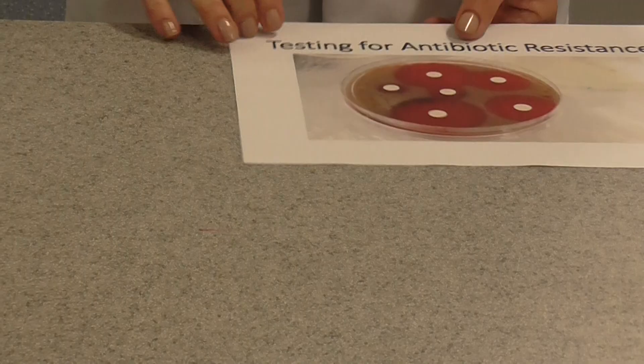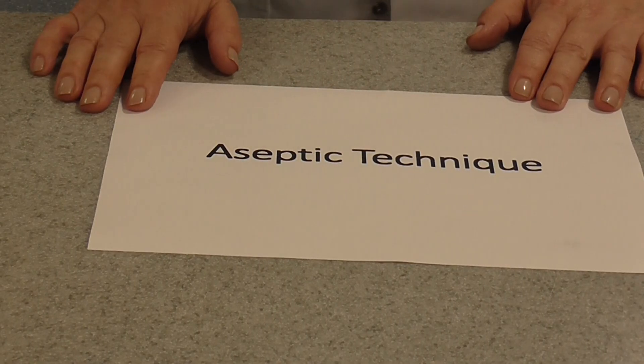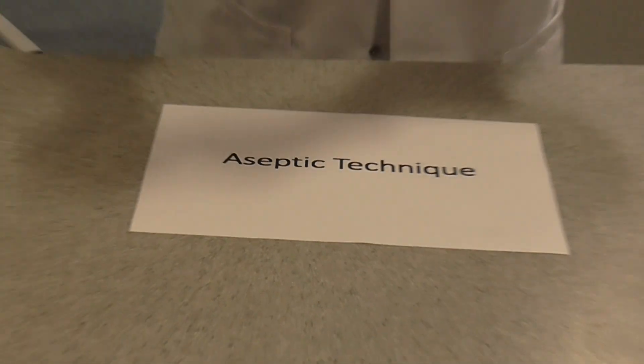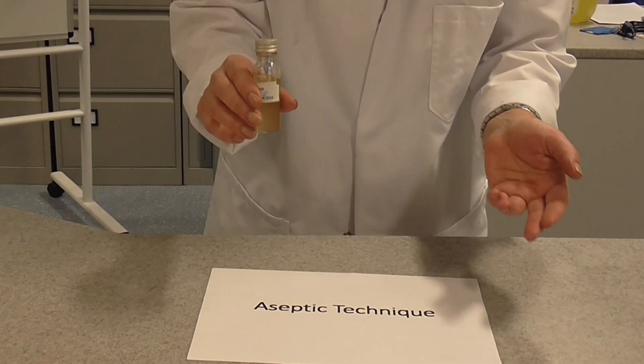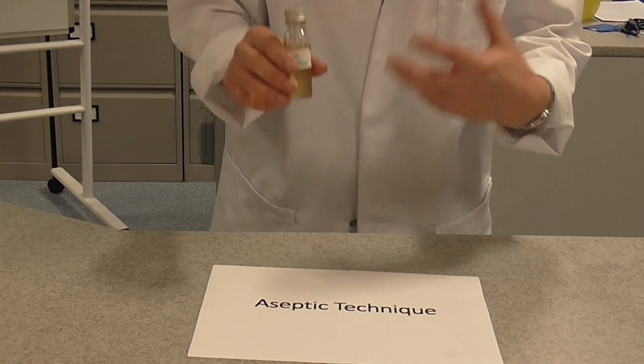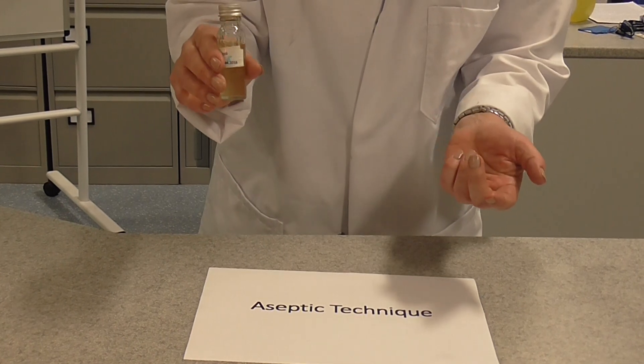Because we're working with live bacteria throughout this practical, we have to use what's known as aseptic technique. These are techniques that we use to firstly prevent our culture from becoming contaminated with bacteria from the lab, but also to prevent contamination of the lab and myself with bacteria from the culture, which could potentially be quite dangerous.